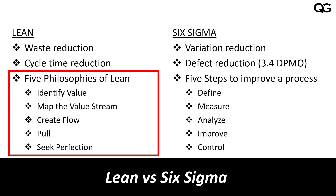In lean, we use the five principles of lean. First, identify value — understand what the customer values. Then map the value stream, considering both the flow of product and the flow of information. Then create flow so there is no disruption or breakdown and the service is performed without interruption. The fourth principle is pull, where the item or service is given based on customer demand. The fifth is seek perfection, where we aim to make things perfect and reduce defects.